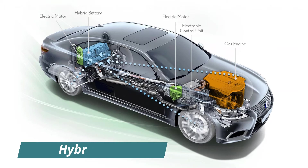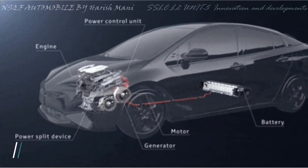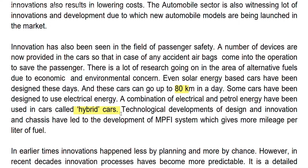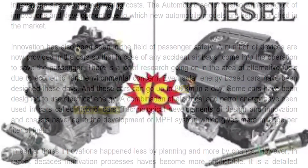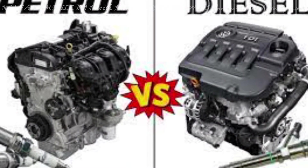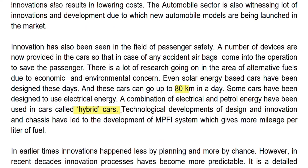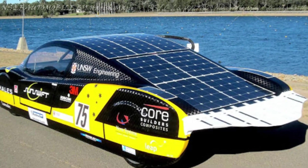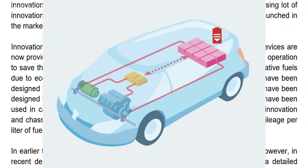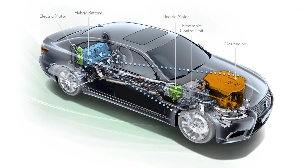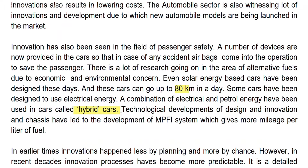Next, hybrid cars. This is a combination of two or more power sources. This is a combination of petrol, diesel, electrical, and solar energy. This hybrid car is mixed with all these power types — petrol is mixed with electrical power.